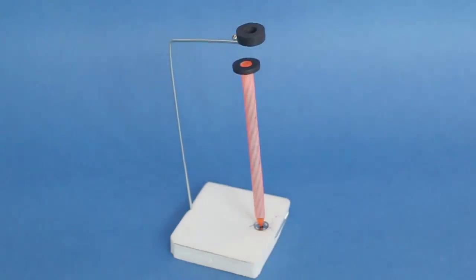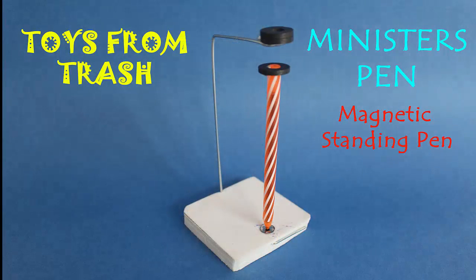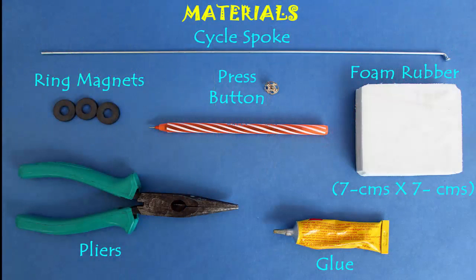Well this beautiful magnetic pen stands without any support and spins and writes. For making this model you will need three ring magnets, a pen, foam rubber, bicycle spoke and a press button.